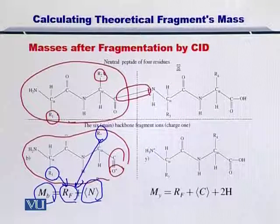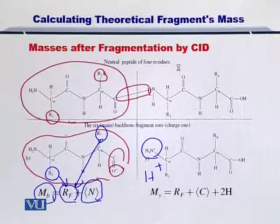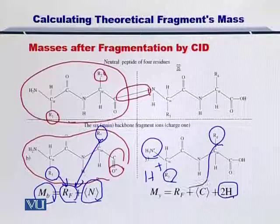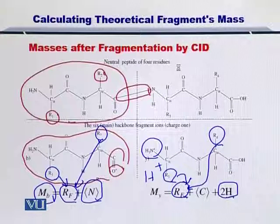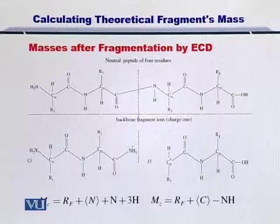Similarly for the Y ion, if you notice carefully, we have a proton added as well as a hydrogen added. So in this case you have a 2+ charge, and you have the side chains added to give the molecular weight of the residues and the C-terminal.